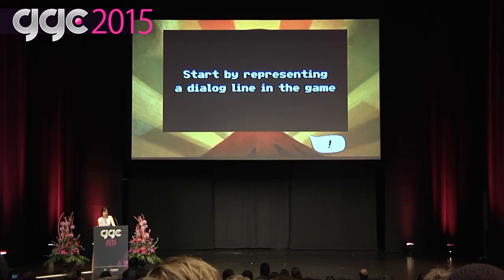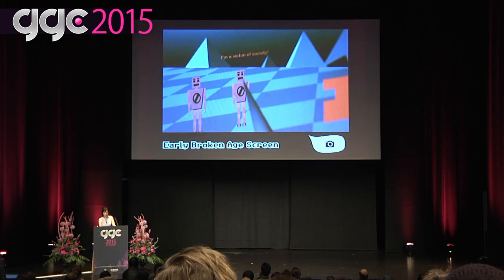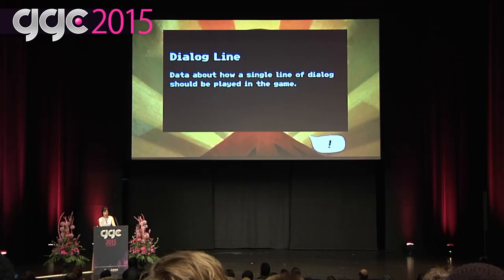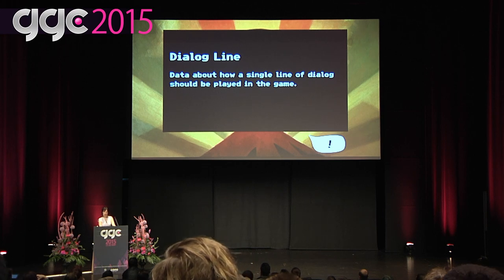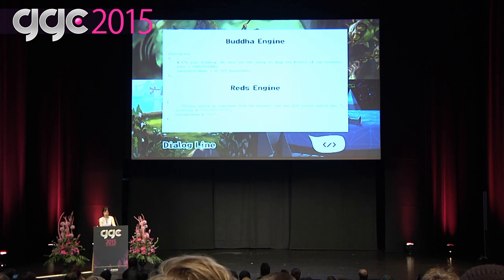Once you've done some preliminary character design, the best place to start is being able to represent a line of dialogue in the running game — something as simple as displaying text over a character's head. This lets you experiment with how you'd like dialogue to work and whether recorded dialogue is even right for your game. A dialogue line is data about how a single line of dialogue should be played. Here's what a dialogue line looks like in the two engines I mentioned: the Buddha engine uses a proprietary scripting language, and RADS uses Lua, but the data looks quite similar.